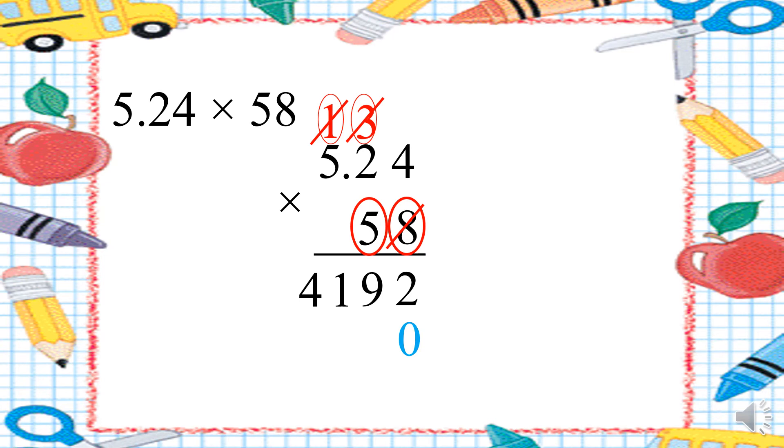Don't forget to put the 0 under the 1's digit. Now I will start with the 10th digit. Okay? And I will multiply it by all the digits up. 5 times 4. 20. 0 down and 2 up. 5 times 2. 10 plus 2. 12. 2 down and 1 up. 5 times 5. 25. Plus 1. 26. I will write it down. I have finished from the multiplication.